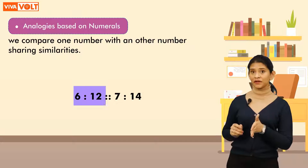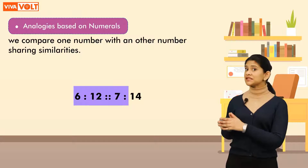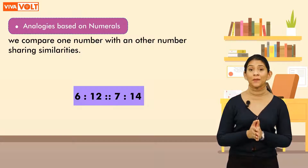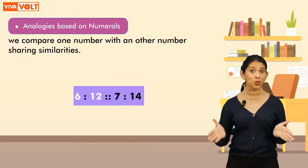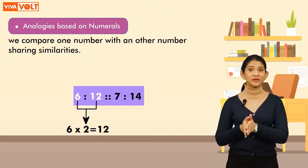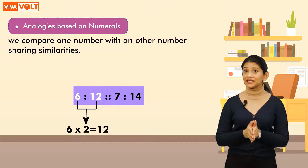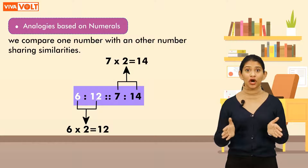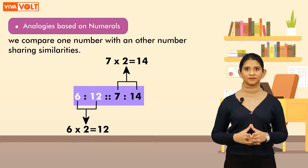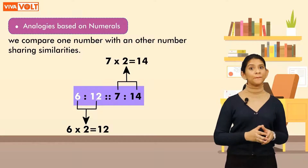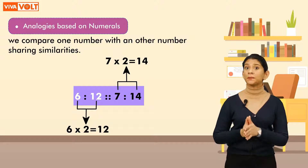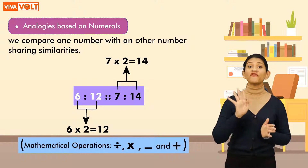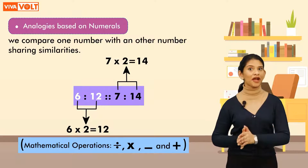Let's see one more example: 6 : 12 :: 7 : 14. Let's try to identify the connection between 6 and 12 — it's simple, if we multiply 6 by 2 we get 12. Similarly, if we multiply 7 by 2 we get 14. Generally, numbers are related to each other on the basis of some common properties, or you can try finding if any of the four basic mathematical operations are applicable.